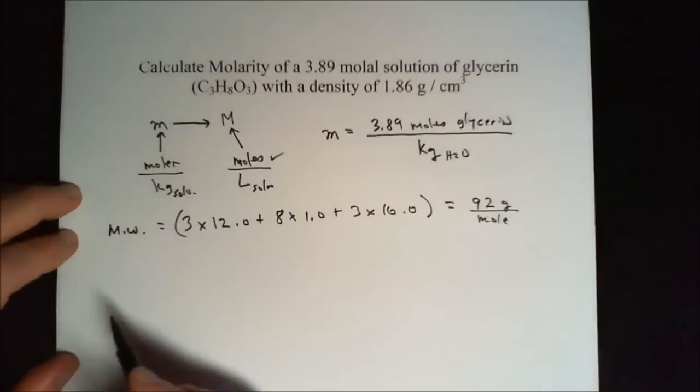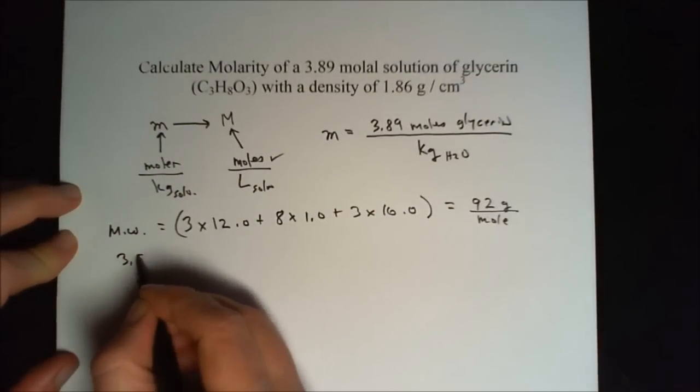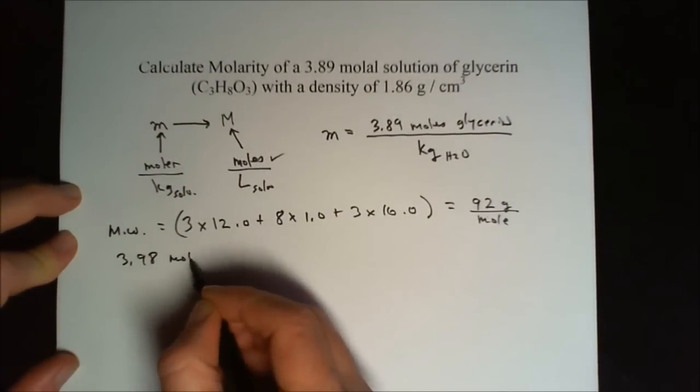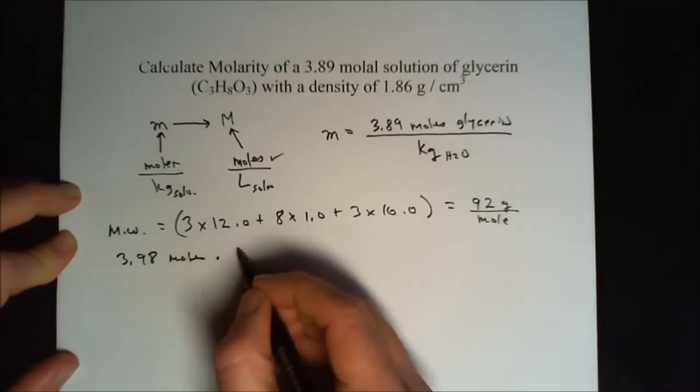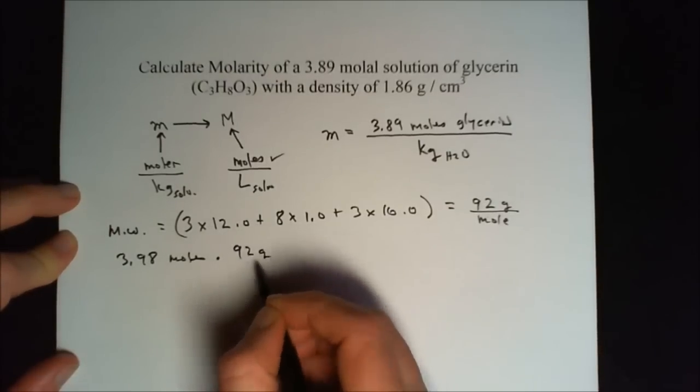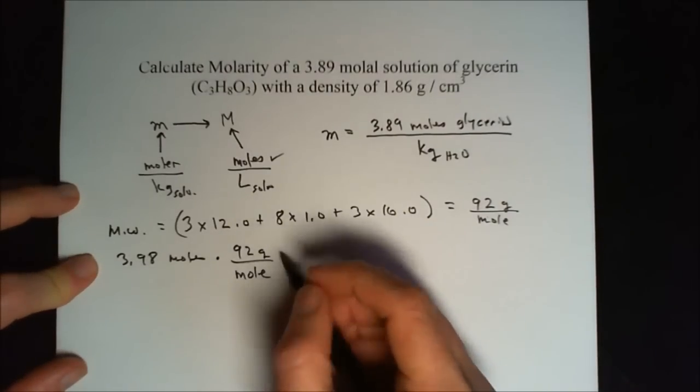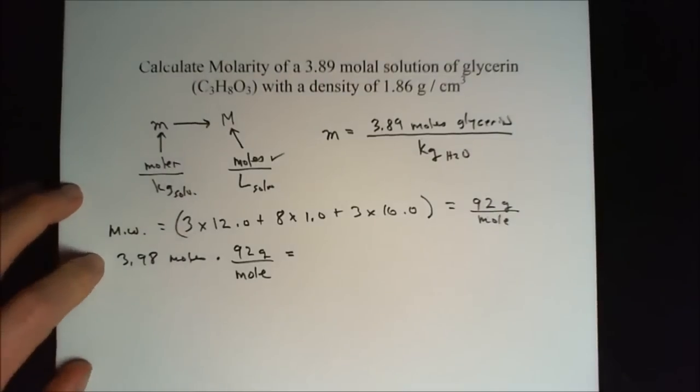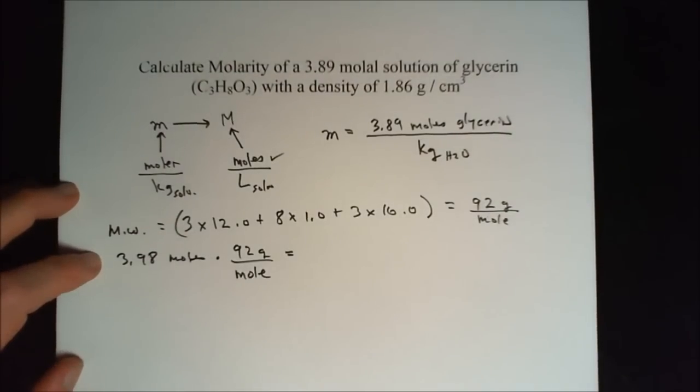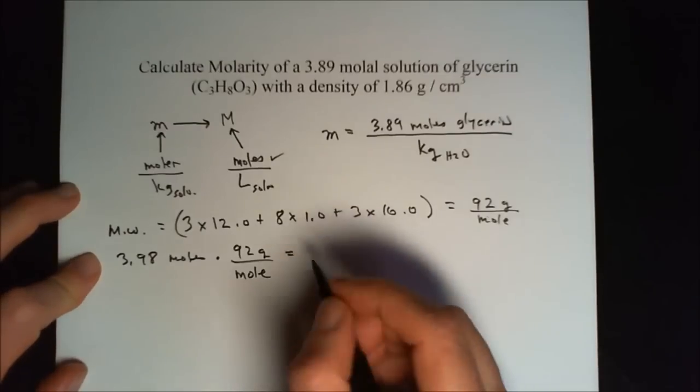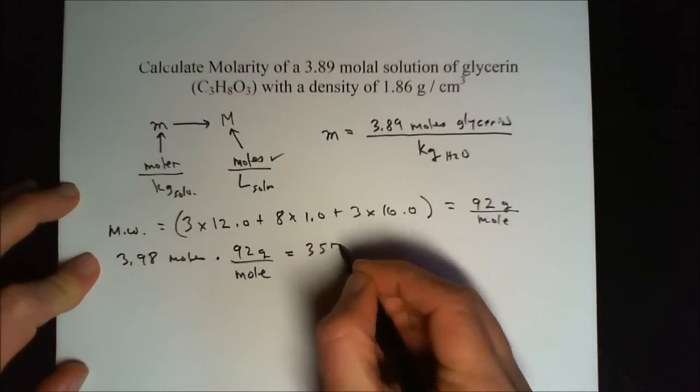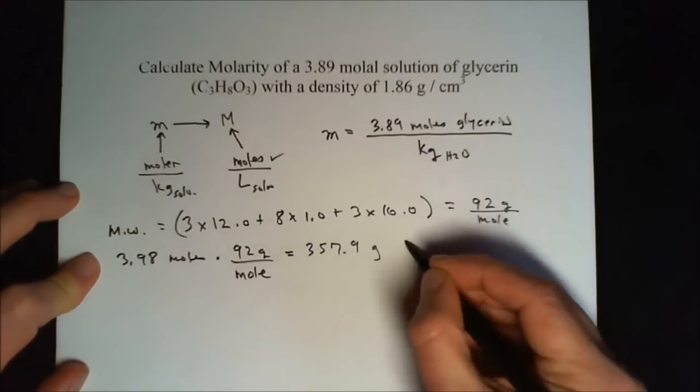Now we can get the mass of 3.89 moles. There's our molecular weight, 92 grams per mole. That will give us our grams. We put that in our calculator and get 357.9 grams of glycerin.